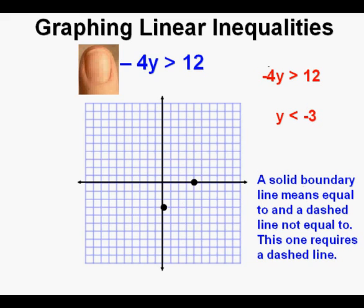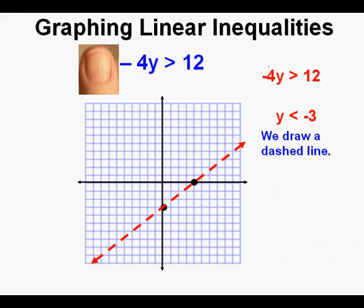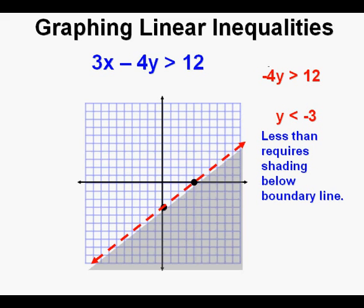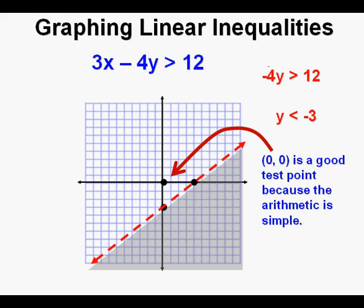With the x and y intercepts drawn, we are ready to draw the boundary line. For inequalities, there are two kinds of boundary lines: a solid line representing 'equal to,' and a dashed line when the boundary line is not part of the solution set. Since this inequality is 'greater than' — not equal to — this will be a dashed line. We draw a dashed line using these two points. And since the sign is 'less than' for y, we shade below the boundary line. So this is the graph of 3x minus 4y is greater than 12.